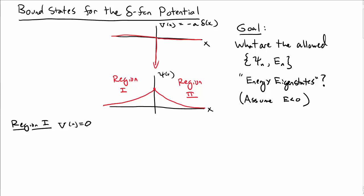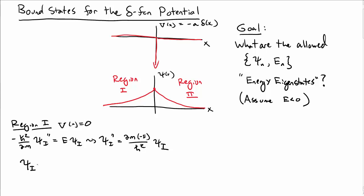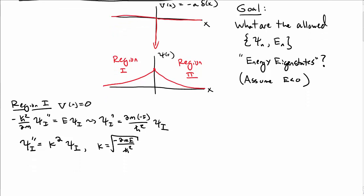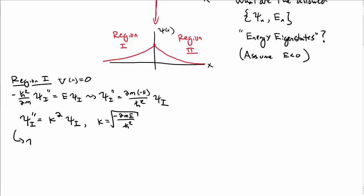In region 1, the potential is 0, so we have minus h-bar squared over 2m times psi 1 double prime equal to E times psi 1 for our Schrödinger equation. Rearranging, psi 1 double prime equals 2m times minus E over h-bar squared times psi 1. Since minus E is a positive number, everything on the right is positive. So we write that as k squared times psi 1, where k equals the square root of minus 2mE over h-bar squared, which is a manifestly real number since the energy is negative.